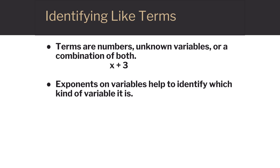Exponents on variables help to identify what kind of term it is. For 2x squared plus x, we have an x squared term and an x term.